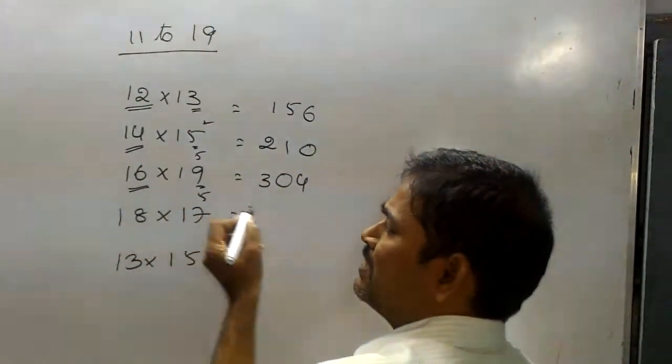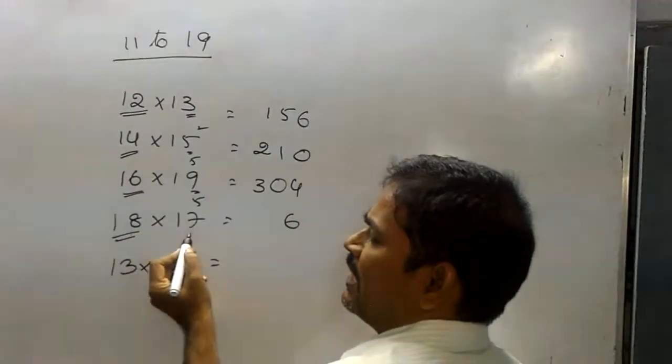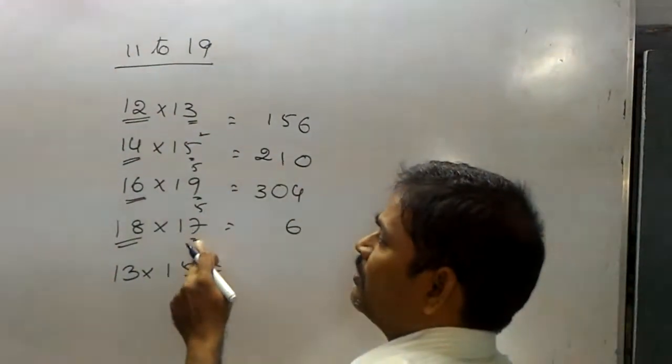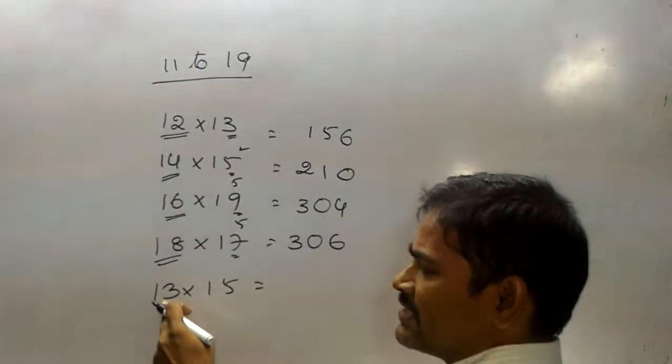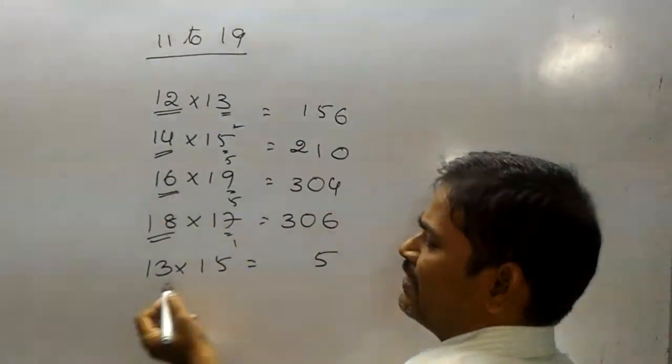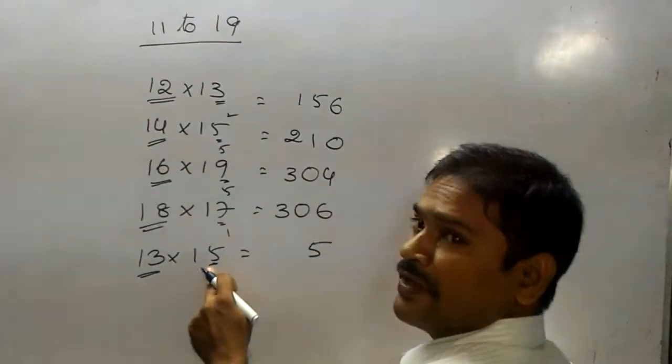8, 7, 56. 18 plus 7, 25. 25 plus 5, 30. Next, 3, 5, 15. 13 plus 5, 18.